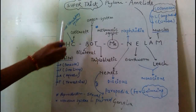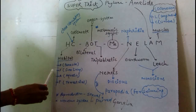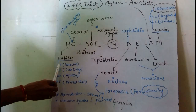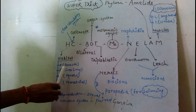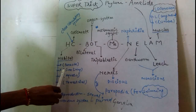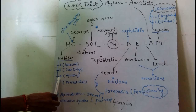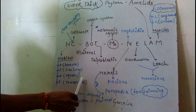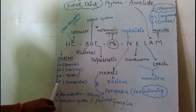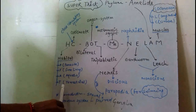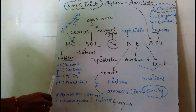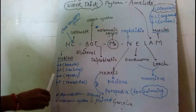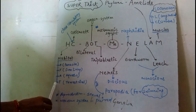This is the habitat. Annelids can be free-living. In aquatic environments, there are two types: freshwater and marine, and also terrestrial. So there are four types of habitat.